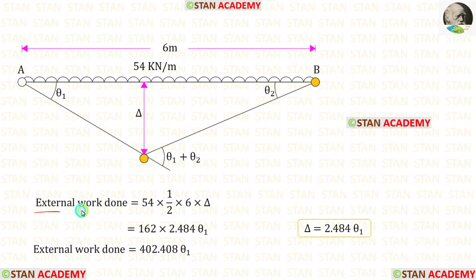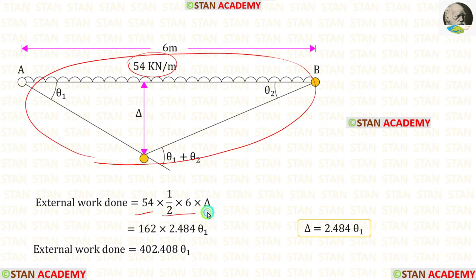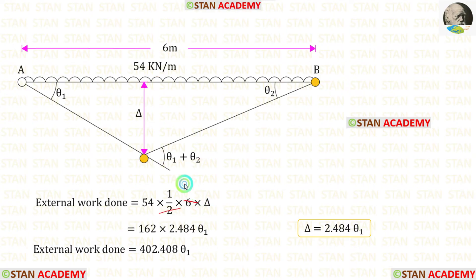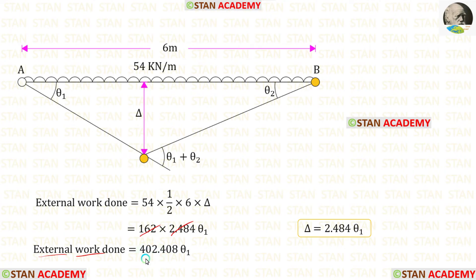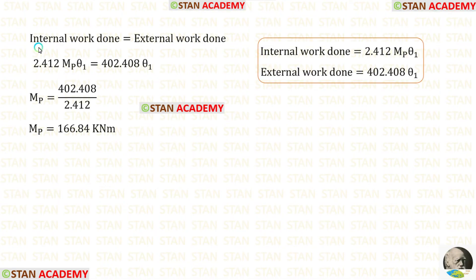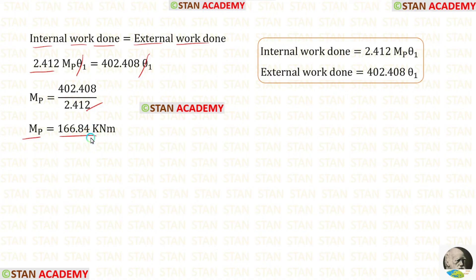Now let us find the external work done. We multiply the load by the area of the displaced triangle, which is ½ × 6 × delta. That gives 54 × 3 × delta = 162 delta. Substituting delta = 2.484 theta1, the external work done equals 402.408 theta1. Equating internal and external work done and cancelling theta1, we get MB = 402.408 / 2.412 = 166.84 kNm.